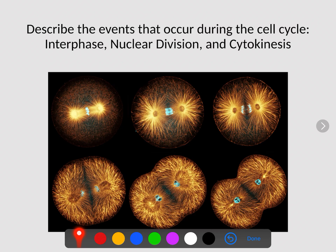Brian here, and this is the first video of your Topic 5, Cell Reproduction and Genetics. In this section of the notes, we're going to describe the events that occur during the cell cycle. This is going to include interphase, when the cell is not dividing — it's growing, getting bigger, replicating its DNA — nuclear division, which would be mitosis and meiosis, as well as cytokinesis when we are splitting our cytoplasm.